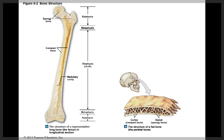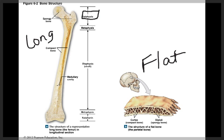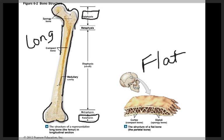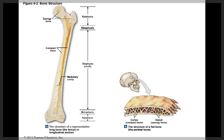Now we're going to take a look at bone structure. Here we have an example of a long bone. The epiphysis is the area that is expanded at each end of the bone. The long shaft of the bone is called the diaphysis, and the area where the diaphysis meets the epiphysis in the narrowed region is called the metaphysis.